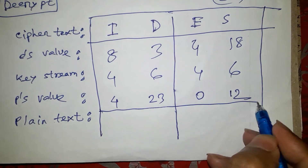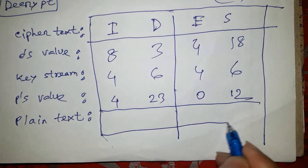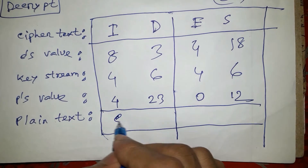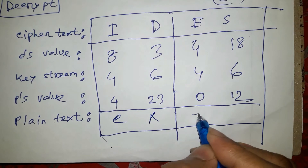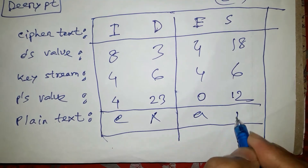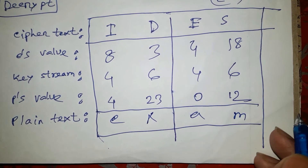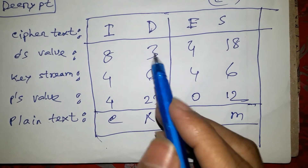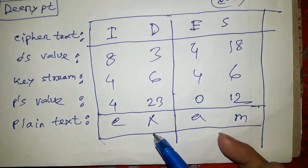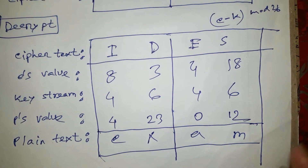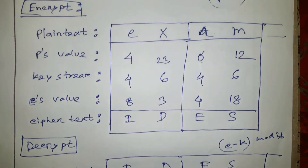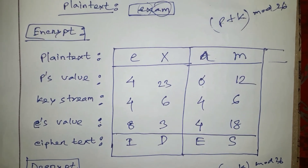We are going to take a look at the cipher text. We are going to take a look at E, R, X, R, A, R, M. Okay, we are going to take a look at the cipher text.